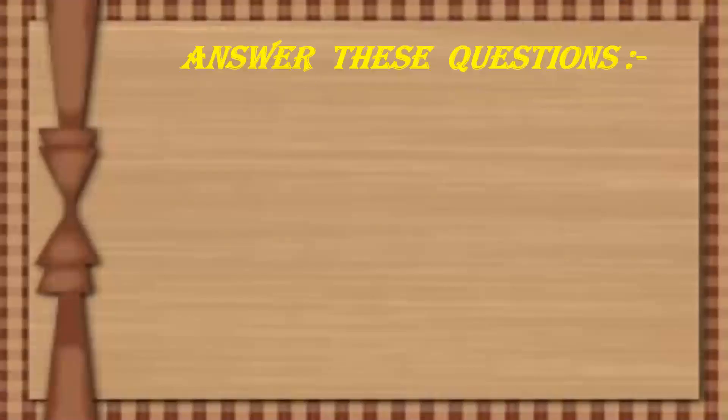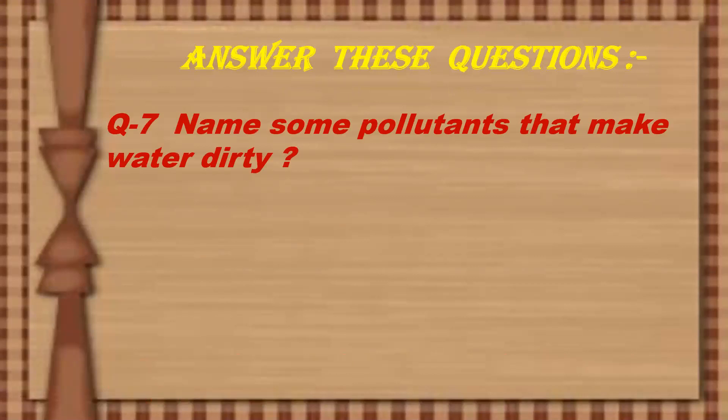Answer these questions. Question number 7: Name some pollutants that make water dirty. Pollutants are those things which make the water dirty. Pollutants are undesirable substances which, when added to water, make the water unfit for use and make the water dirty.